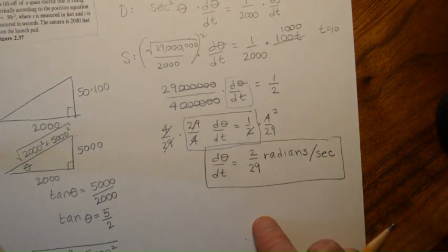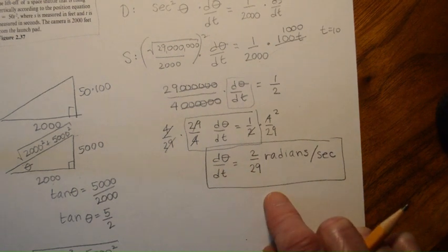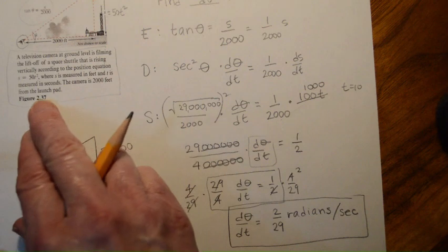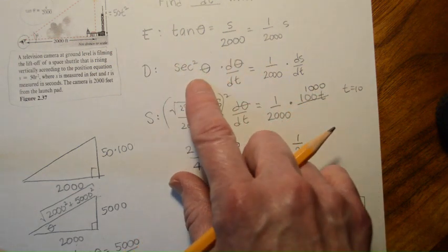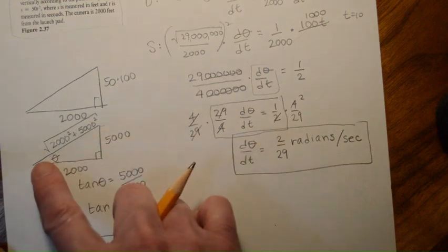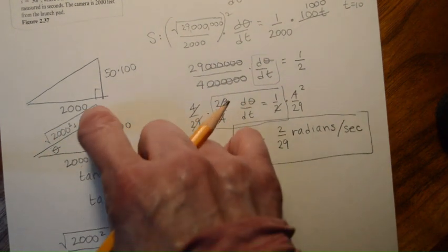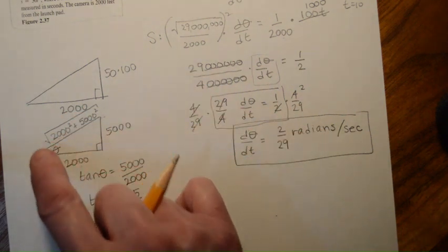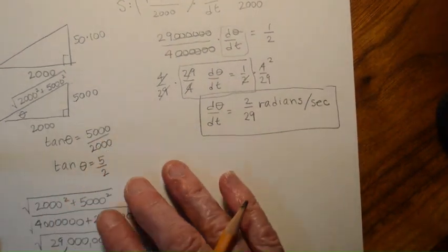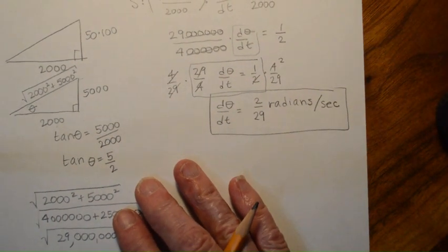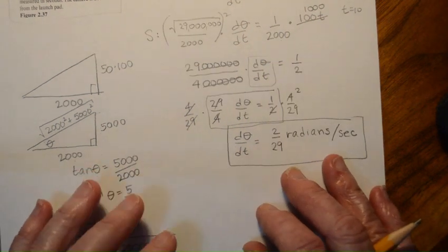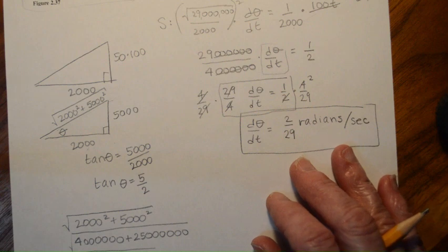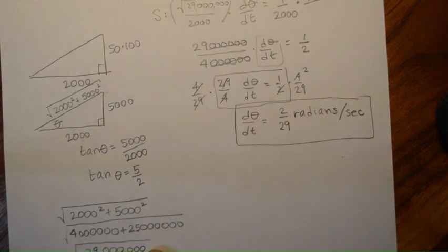I would never expect you to do this problem on your own at this stage — it's our fourth example — but it's a great refresher for trig: angle of elevation, derivatives of trig functions, and finding a missing side to determine another trig value. All good refreshers, but this is really a stretch problem. Feel free to stop, go back, look at it again, and work through it step by step. Sometimes hearing it a second time you'll pick up things you missed the first time.